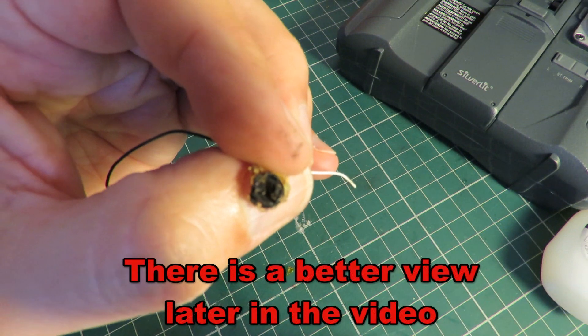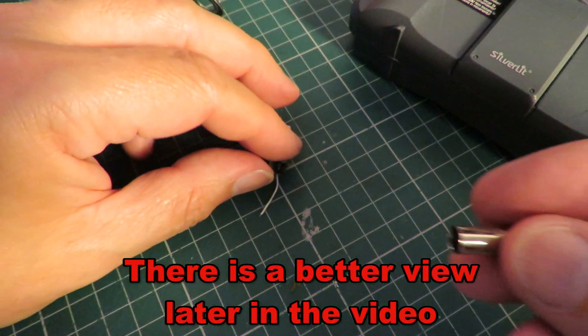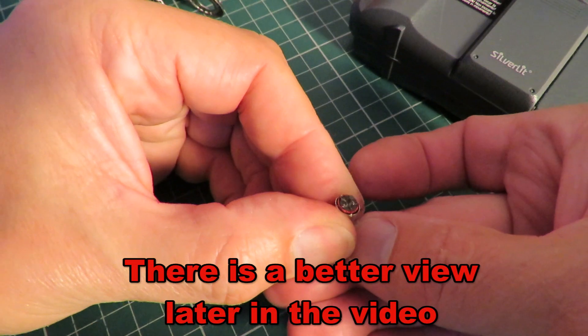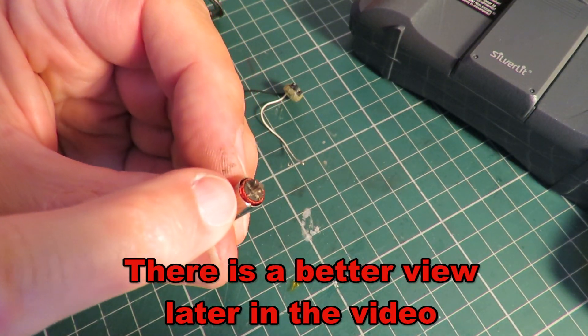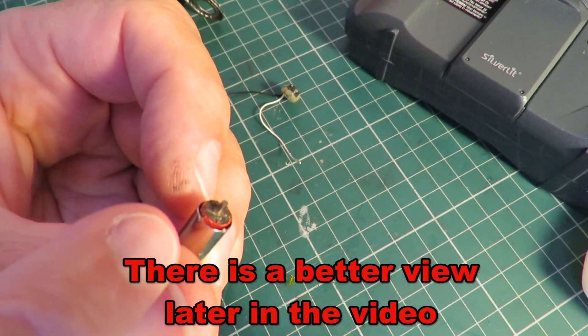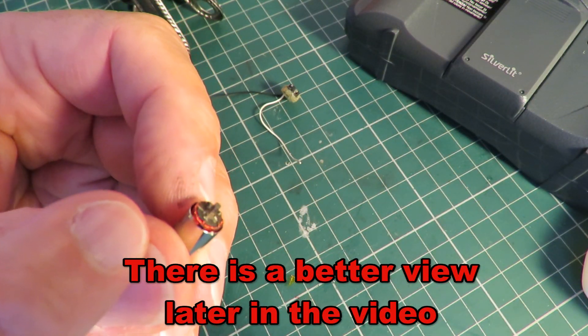I don't know if we can see the little brushes in there. Well they go either side of the commutator there. As I turn it around you can see the gaps between them.